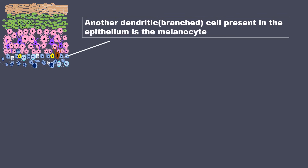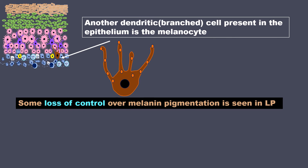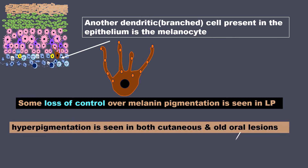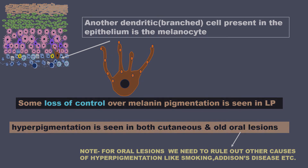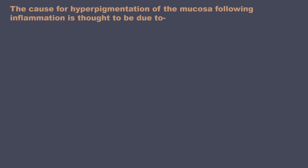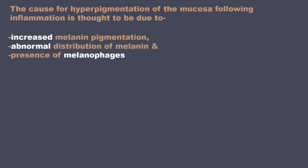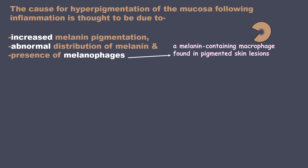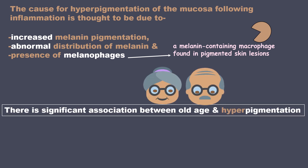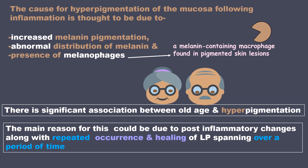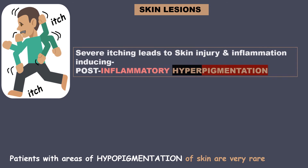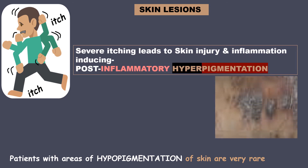Another dendritic cell present in the epithelium is the melanocyte. Some loss of control over melanin pigmentation is seen in lichen planus. Hyperpigmentation is seen in both cutaneous and old oral lesions. For diagnosis of oral lesions, we need to rule out other causes of hyperpigmentation like smoking and Addison's disease. The cause of hyperpigmentation of the mucosa following inflammation is thought to be due to increased melanin pigmentation, abnormal distribution of melanin, and presence of melanophages. There is a significant association between old age and hyperpigmentation, mainly due to post-inflammatory changes along with repeated occurrence and healing of lichen planus over time. In skin lesions, severe itching leads to skin injury and inflammation, which induces post-inflammatory hyperpigmentation.